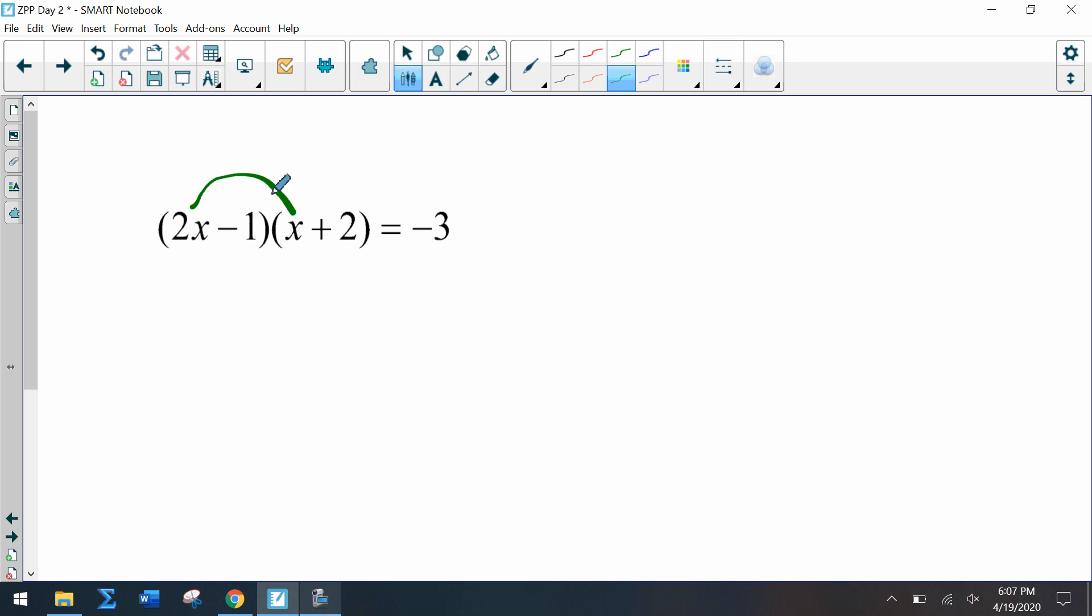So this may sound counterproductive, however this is the only way we can go through and solve this problem. We have to actually multiply our first, outer, inner, and last. So here we go: 2x times x is 2x², outer, inner, last.